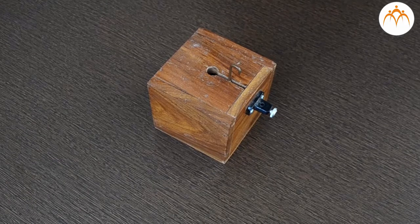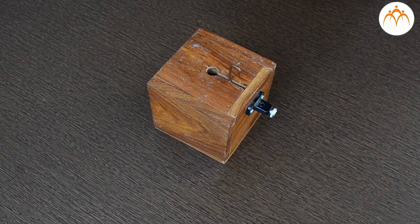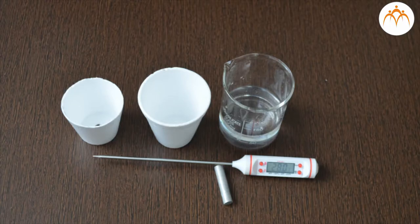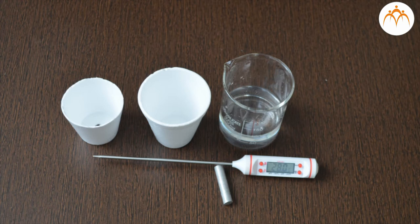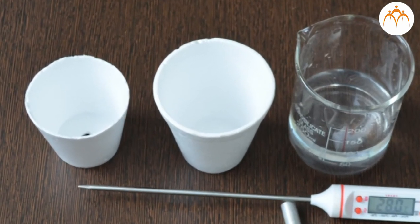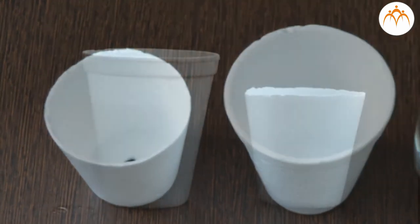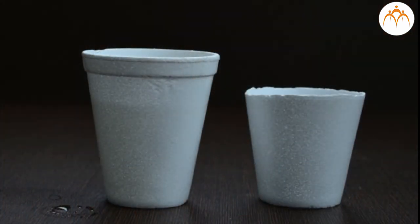Instead of a standard calorimeter, we will build a simple calorimeter using just thermocool cups. This will not be very accurate, but will help us understand how a real calorimeter works. We will use two thermocool cups. Thermocool acts as a good insulator of heat. One cup is made smaller by cutting its top part.